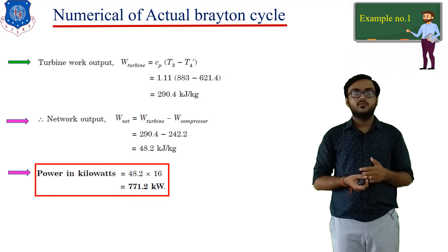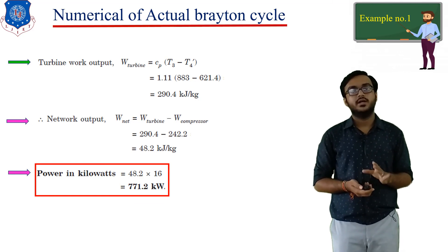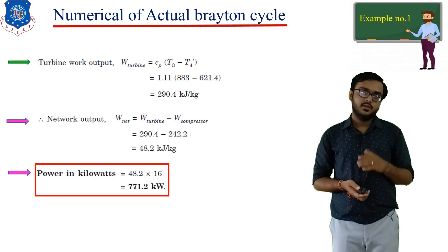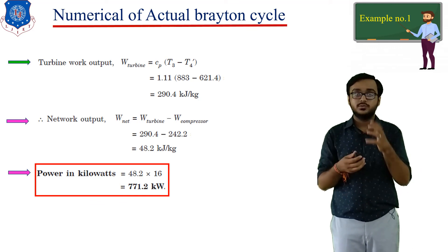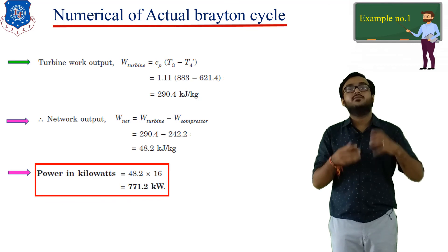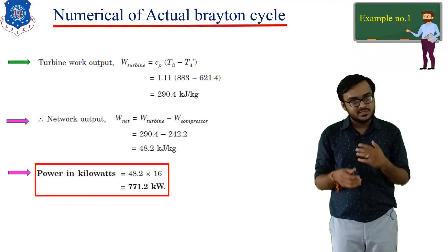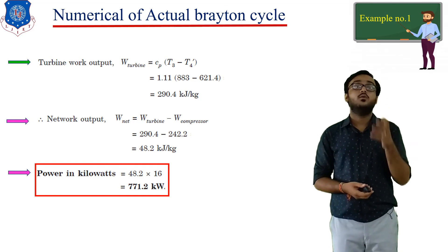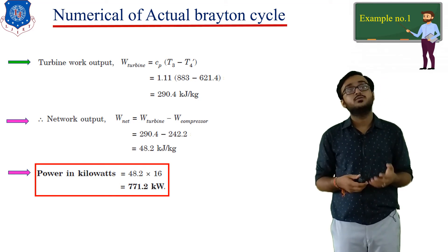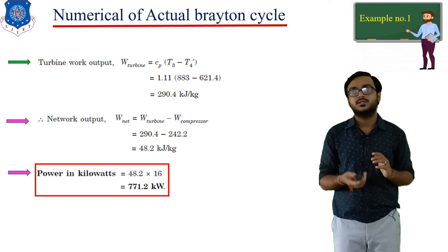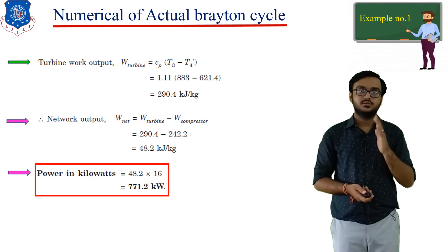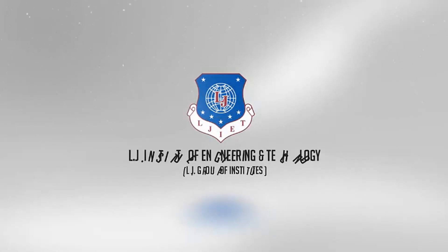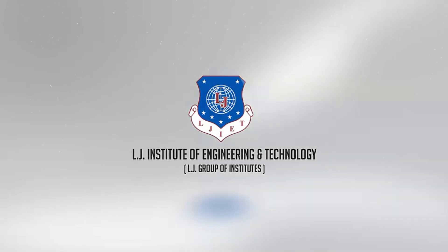That is all about today's example. We have solved a numerical example related to the actual Brayton cycle, and observed how to use the equations of turbine and compressor isentropic efficiency to find the actual temperatures after compression and after expansion. Thank you.